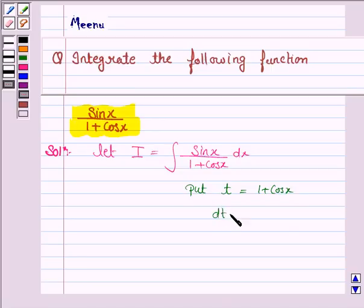So dt by dx is equal to minus sin x. And this implies dt is equal to minus sin x dx. And this implies sin x dx is equal to minus dt.